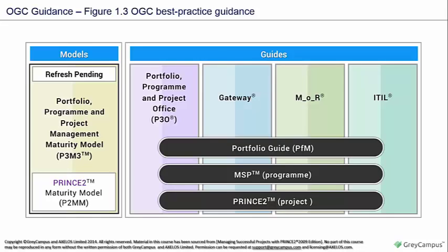In the OGC best practice structure, on the left you can see the models - what's called the P3M3 model (Portfolio, Programme, and Project Management Maturity Model) and below that the PRINCE2 Maturity Model. On the right you have the Guides: Portfolio, Programme, and Project Office; Gateway; MOR which is Management of Risk; and ITIL, which you may well have heard of. Within those you have the Portfolio Guide (PFM), MSP which is Managing Successful Programmes, and PRINCE2 for Project Management - operating at the Portfolio level, the Programme level, and the Project level respectively.